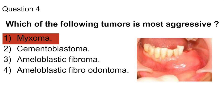Odontogenic myxomas are aggressive intraosseous neoplasms derived from the embryogenic odontogenic mesenchyme, probably arising from the dental papilla or follicular mesenchyme. Nearly all lesions are commonly found in the tooth-bearing areas of the maxillary and mandibular bone. Mandibular lesions are commonly found in the premolar and molar area. The lesion often produces multilocular radiolucency with a soap-bubble or honeycomb appearance in the bone. The thin and extremely delicate septa of the bone often produce a spider-web-like or tennis-racket-like appearance. So the answer is myxoma.